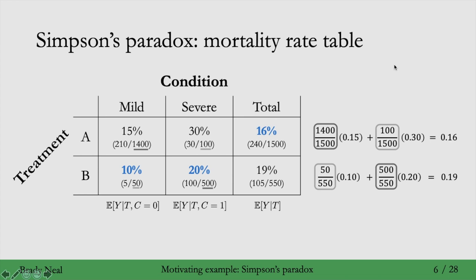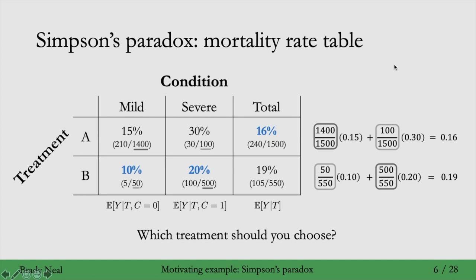Simpson's paradox largely comes from this unequal weighting — from the fact that the treatment A people mostly had mild condition and the treatment B people mostly had severe condition. And people with severe condition are just more likely to die than people with mild condition. That's why we see this flipping of the numbers. But I've kind of explained why we have the flipping of the numbers — the question still remains: which treatment should you choose? The spoiler is that, as I'll show you in the next few slides, the answer to this question largely depends on the causal structure of the problem.